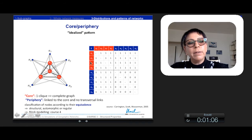With in red the core nodes, which are all connected and connected to the nodes of the periphery, but the periphery is not connected all together. This kind of matrix can be used for classification of nodes according to their equivalents.